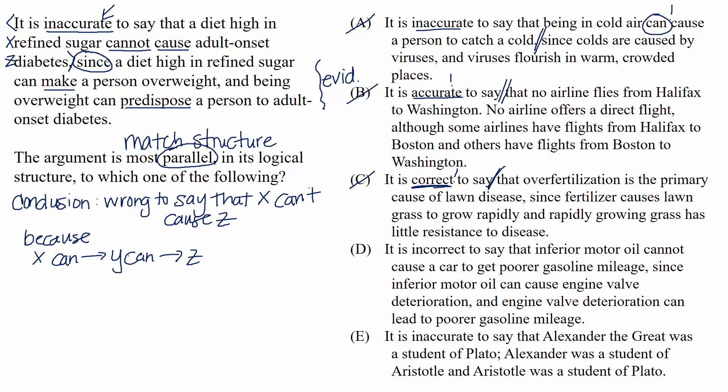If we map this out symbolically, we can call poor gasoline mileage Z, we can call inferior motor oil X, and we can write it out like this. It's wrong to say that X can't cause Z, since X can cause Y, and Y can lead to Z.